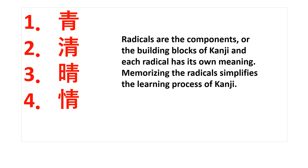The best way to learn kanji is by understanding the radicals. Radicals are the components or the building blocks of kanji, and each radical has its own meaning. Memorizing the radicals simplifies the learning process of kanji. Radicals can be two, three, or more, which join together to build a kanji. For example, this kanji — ao, which means blue — has two radicals.